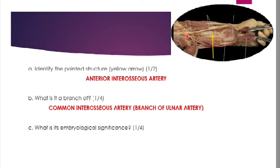On reaching the gap above the interosseous membrane, this artery divides into anterior and posterior interosseous arteries. The pronator quadratus muscle is visible here. The anterior interosseous artery descends in close contact with the interosseous membrane, accompanied by the anterior interosseous nerve, a branch of the median nerve. On reaching the upper border of the pronator quadratus muscle, it pierces the interosseous membrane and goes backwards to anastomose with the posterior interosseous artery at the back of the forearm.